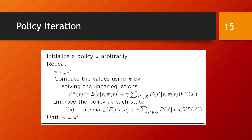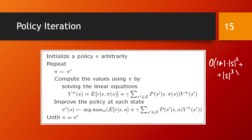The idea is that for any policy you calculate the value function, and once you have the value function you attempt to improve the policy. This algorithm is also proved to converge, and its computational complexity is O(|A| × |S|² + |S|³). This makes it a slower algorithm than value iteration, but in practice it tends to require fewer iterations, so it can be a good alternative.